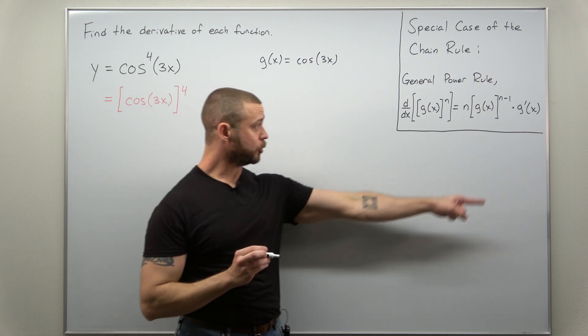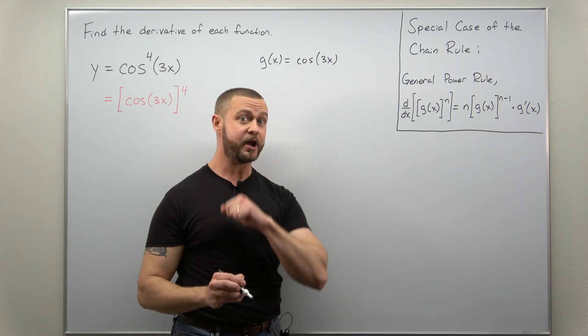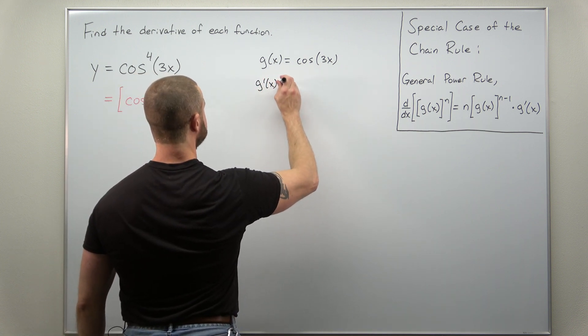Now to apply the general power rule we just need to calculate g prime and that's where we're going to apply the chain rule here. And that should be fairly easy to do at this point.